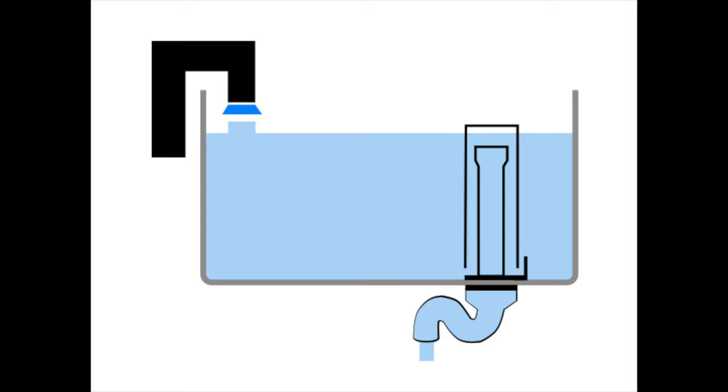More water flows into the riser and slowly fills it. As the water rises, it eventually forms a seal and creates a vacuum inside the bell. Since a vacuum is formed inside the bell, the siphon activates and begins to drain the reservoir.